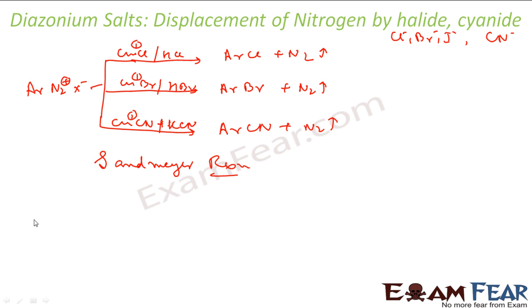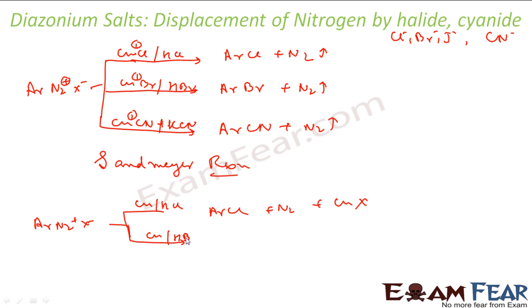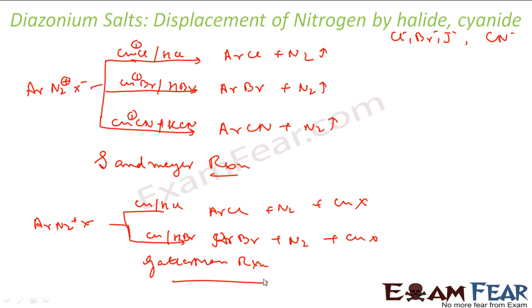Another option is you can use copper powder with HCl — this will also give you ArCl, N2 gas, and CuX. Or just copper powder with HBr gives ArBr, nitrogen gas, and CuX. Here we are using halogen acids in the presence of copper powder, whereas in Sandmeyer we used Cu(I) ions. This reaction using copper powder is called the Gattermann reaction. Sandmeyer reaction is better than Gattermann reaction, but both displace nitrogen by halide or cyanide.